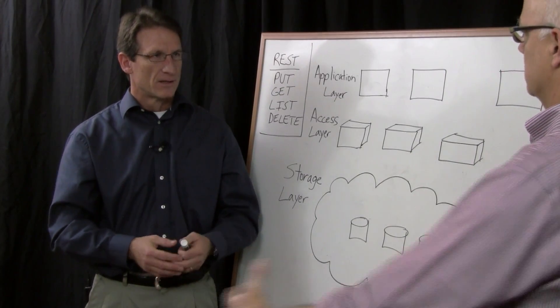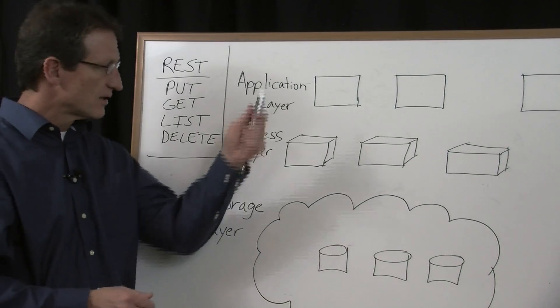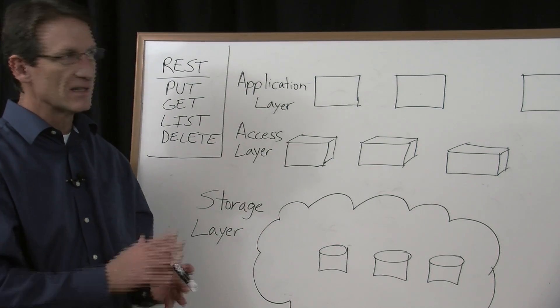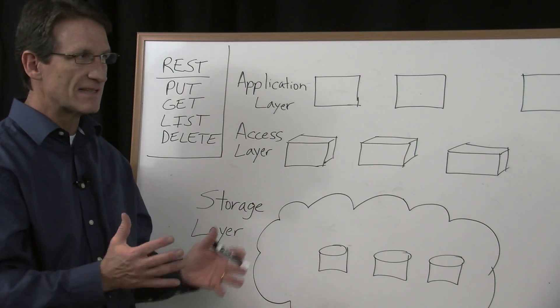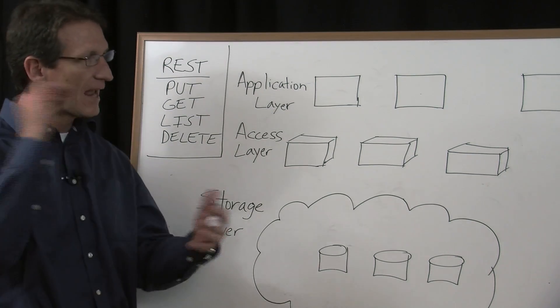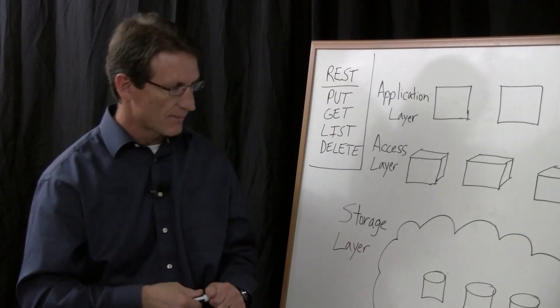So how do you guys do it? CleverSafe is different. We actually designed our architecture just like the Internet is designed today. Everything is peer-to-peer. There's no centralized anything in our structure, and it allows you to scale both capacity and performance independently. Let me describe that a little bit.